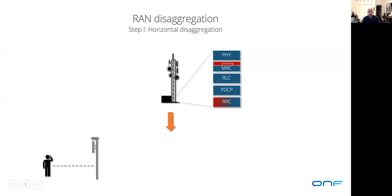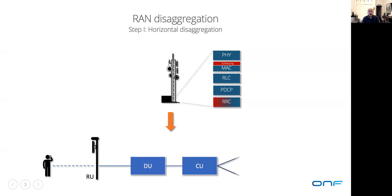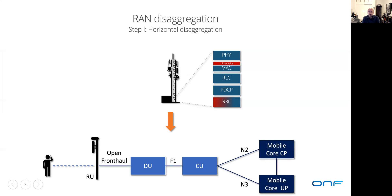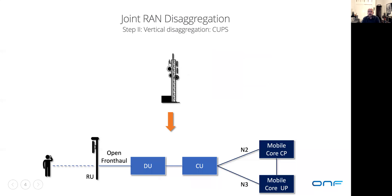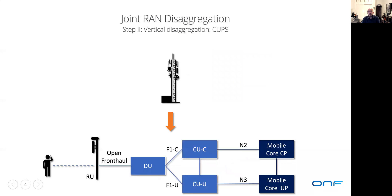In the ORAN-consistent architecture, the disaggregation we're talking about will take place in two dimensions. First is the horizontal disaggregation, which will effectively disaggregate the stack into three components and realize them at distinct locations: RUs at antenna sites, DUs at cell sites, and CUs as virtualized workloads. The second phase of the disaggregation is a vertical one, where we will first disaggregate the CU into its user plane and control plane components. The CU-UP will process and forward user traffic. The CU-CP, on the other hand, will serve two purposes: process and forward mobile control-related traffic and oversee near real-time mobile link control using radio resource management functions.